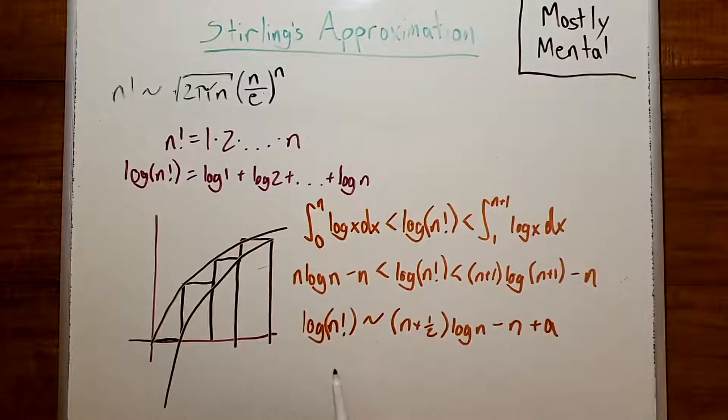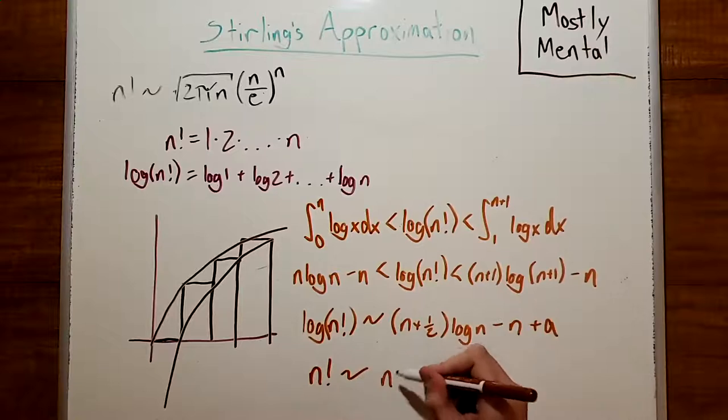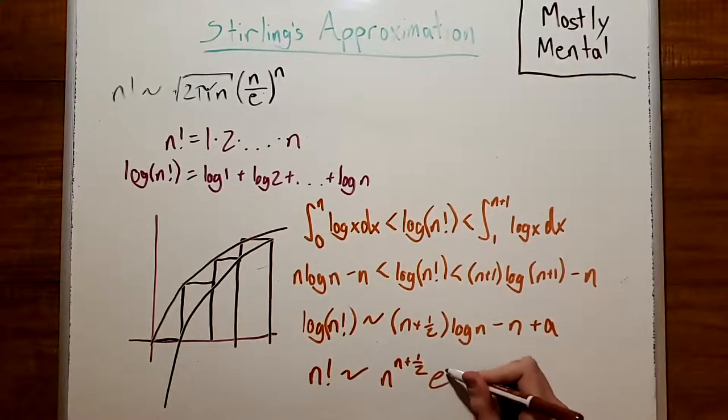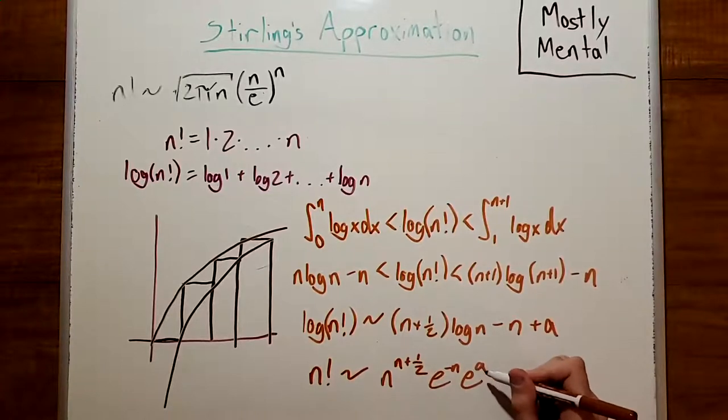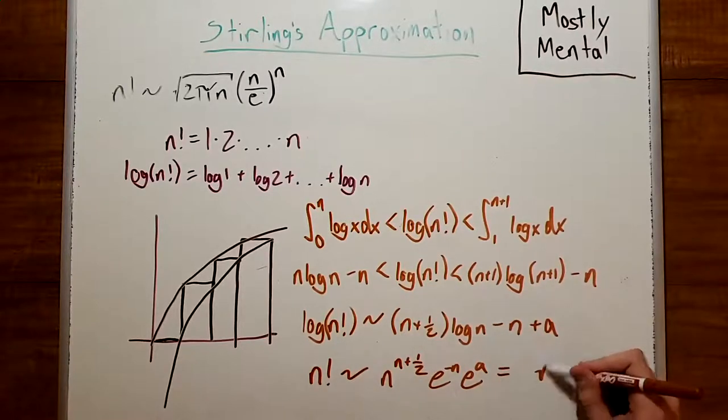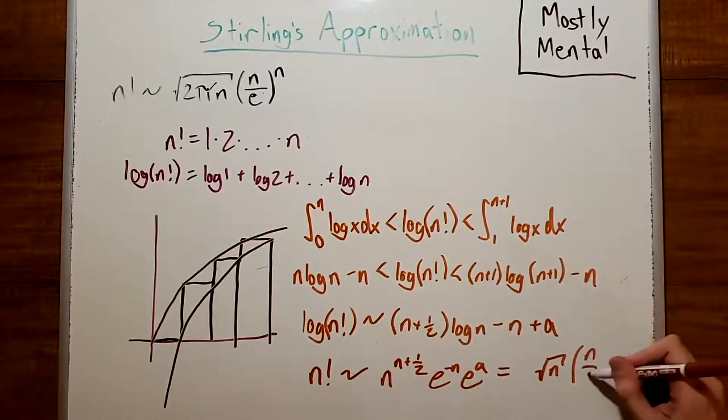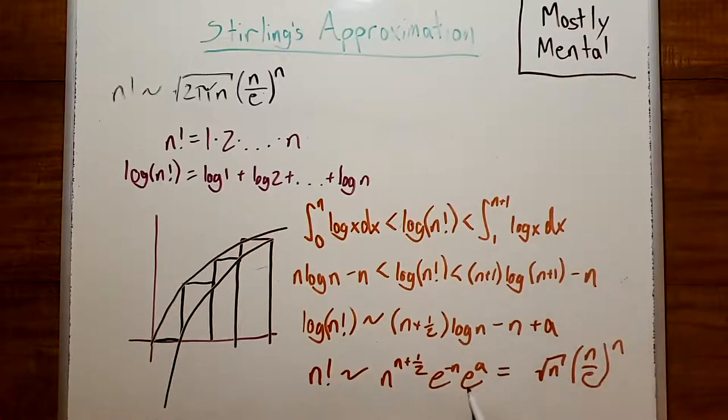But we don't want the log of n factorial. We want n factorial. So, we need to get rid of the log. And we do that by raising e to both sides. So, we get that n factorial is going to be approximately e to the log n, which is n to the n plus 1 half, times e to the negative n times e to the a. And we can rewrite this. That's n to the 1 half is the square root of n. And then n to the n times e to the negative n is n over e to the n. And we can just give this constant here a name. That's going to be a constant times the square root of n times n over e to the n.